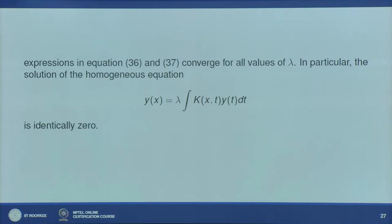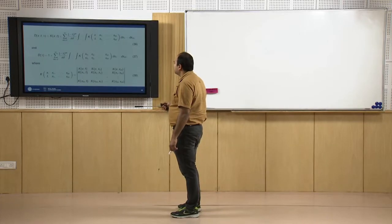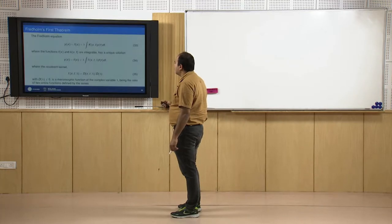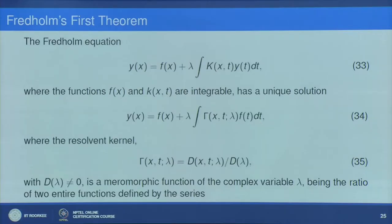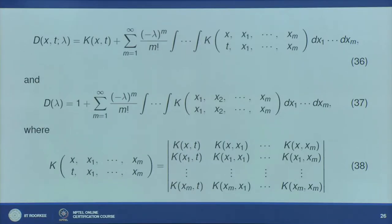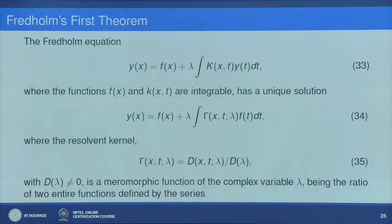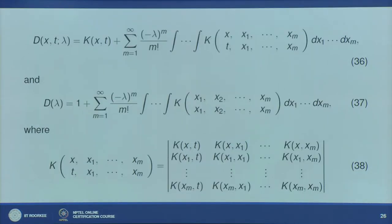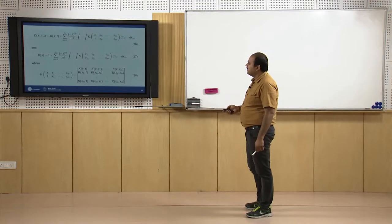In particular, if the homogeneous part f(x) is simply zero, then y(x) will have only a trivial solution. If you know how to find D(x,t,λ) and D(λ), you can write down the solution given in terms of equation 34. We have seen in previous lectures how to find these expressions.